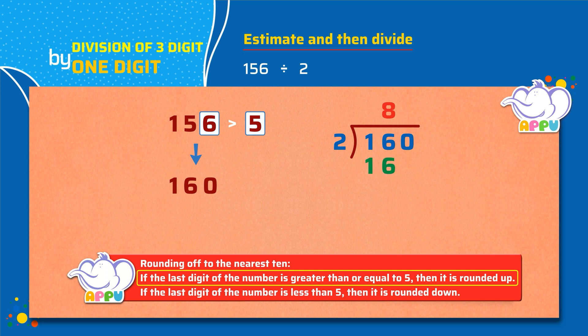Step 3: We subtract 16 from 16, we get 0. Next, we bring down the number in 1's place, which is 0.